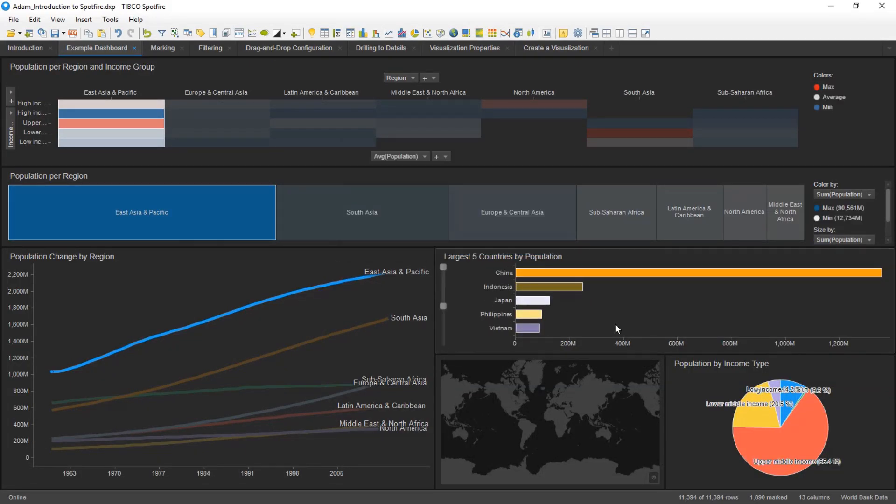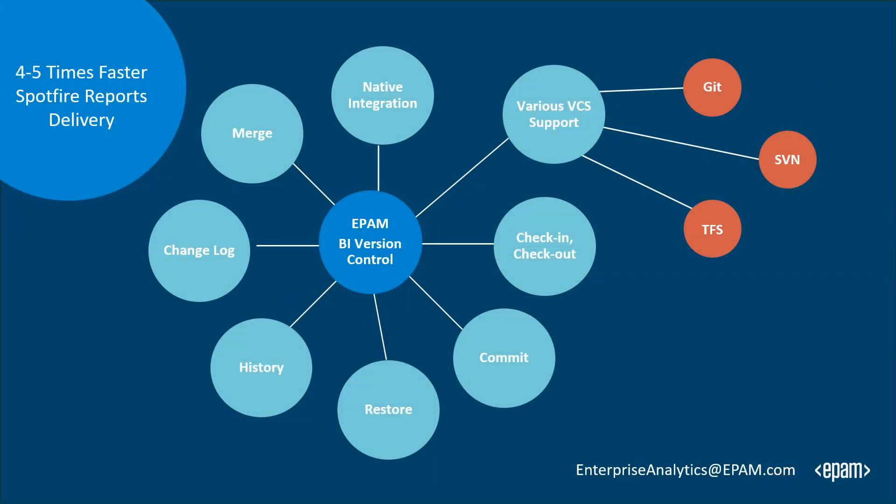With its key features, EPAM BI Version Control increases collaboration and accelerates delivery. With this tool, the delivery of Spotfire reports can be generated four to five times faster due to the improvement of teamwork.